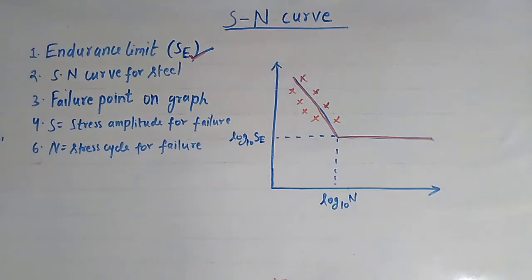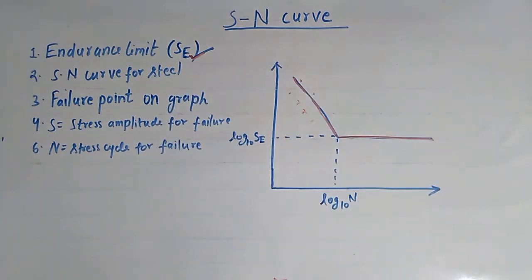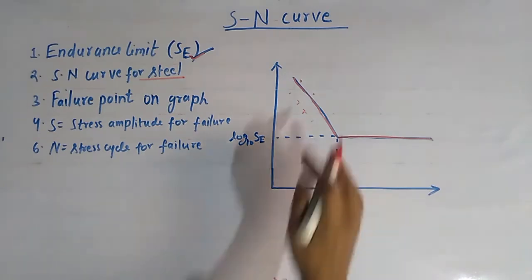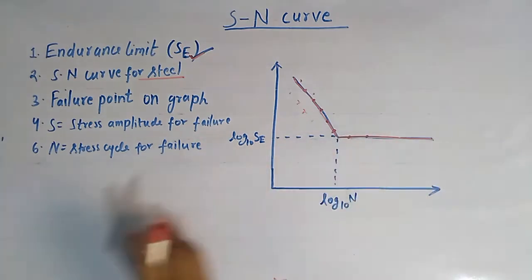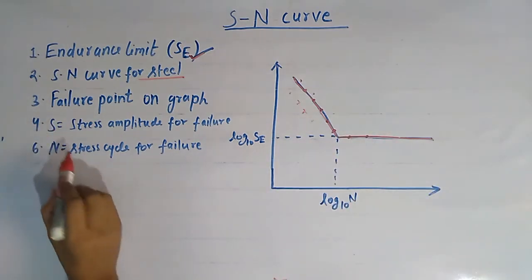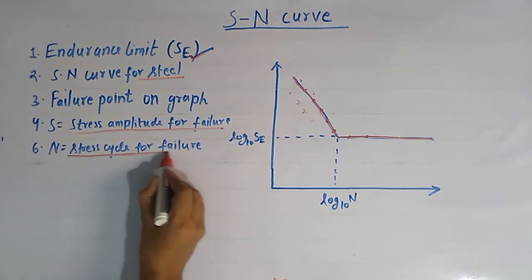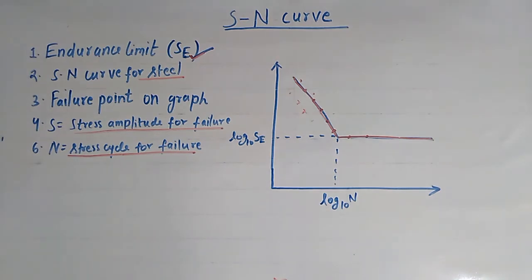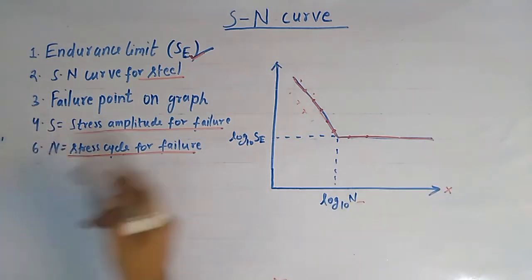This graph gives us the value of endurance limit and we will see how to find it. This SN curve is drawn for the case of steel, and every point on the line denotes a failure point. Here, S represents the stress amplitude for failure and N represents the number of stress cycles required for failure. The value of N is plotted on the X-axis and the value of S is plotted on the Y-axis.